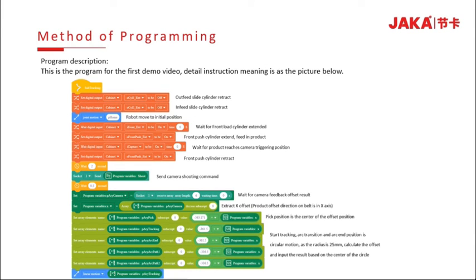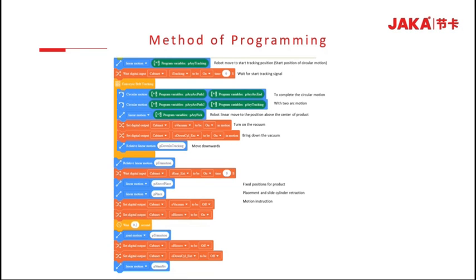First, set the outfeed and infeed slide cylinder as initial status. Then wait for the front load cylinder to extend to fit in the product, then start capturing while the product reaches the camera triggering position. Retract the front push cylinder, wait two seconds for the camera to process, then wait another half second for the camera feedback and read the x offset. Compensate the x offset to the position offset. The robot will move linearly to the stand-high position, which is the starting position of the circular motion. Wait for the start tracking signal, then record the conveyor tracking instruction.